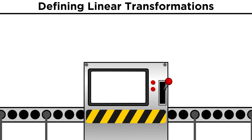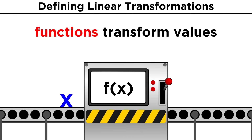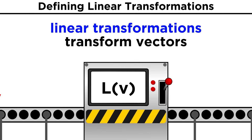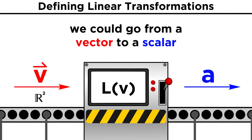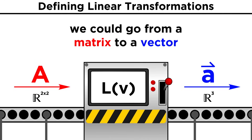Building on what we learned in algebra, whereas a function f(x) will take some value x and transform it into a new value, a linear transformation L(V) will take the vectors in a vector space and transform them into new vectors. The biggest difference is that the transformed vector will not always be the same kind of vector we started with. For example, we could start with V in R2 and end up with a scalar, or we could start with two-by-two matrices and end up with a vector of length three, and so on.